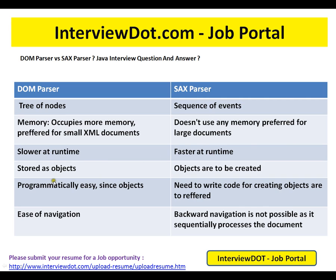DOM is slower at runtime while SAX is faster. In DOM, data is stored as objects; in SAX, objects are created programmatically, so you need to write code for creating them. DOM is easy for navigation, but in SAX backward navigation is not possible since the document is processed sequentially.